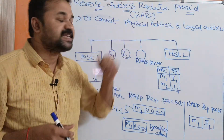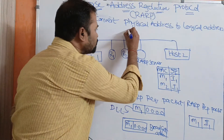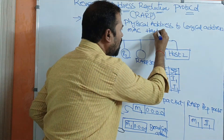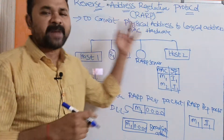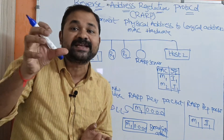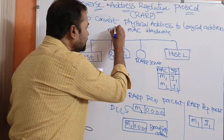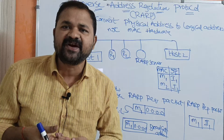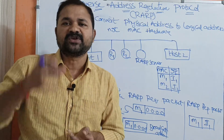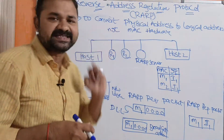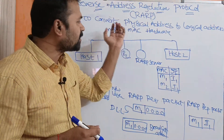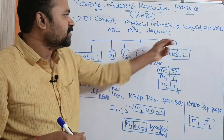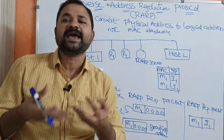We know that physical address can also be called as MAC address, or this can also be called as hardware address. MAC address is nothing but a unique number which is assigned to the NIC of every machine. NIC stands for Network Interface Card. So every system will contain a NIC card, and physical address or MAC address or hardware address is that NIC card address. Whereas logical address is nothing but IP address.